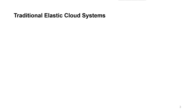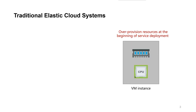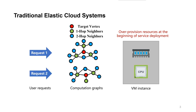In traditional clouds, instances are always provisioned with excessive resources at the beginning of service. When requests arrive, their computation graphs are sent to the instance for inference.